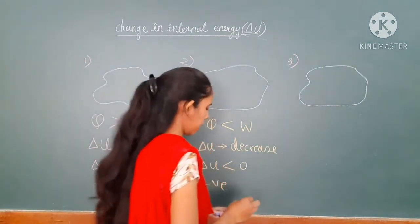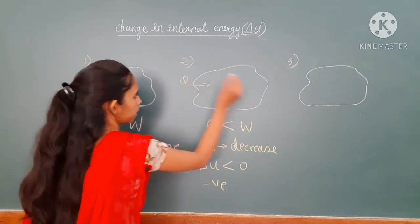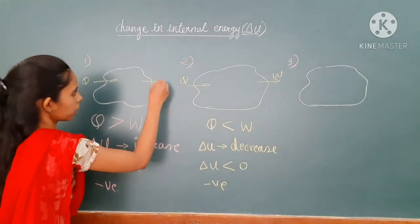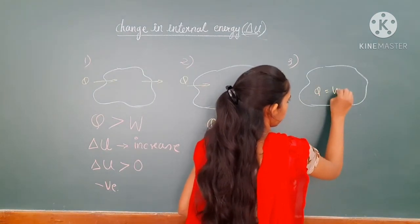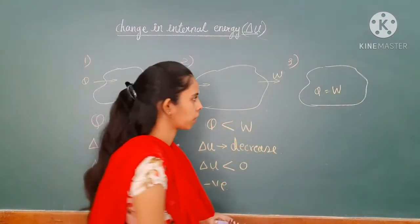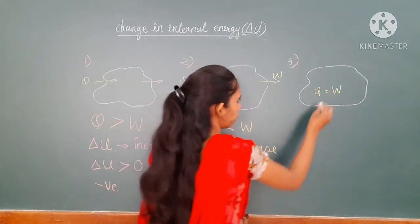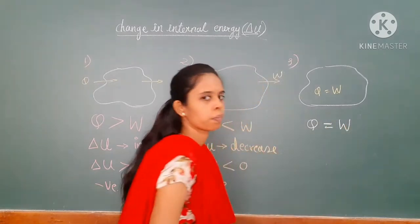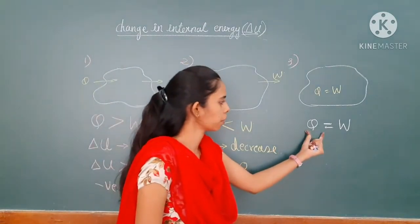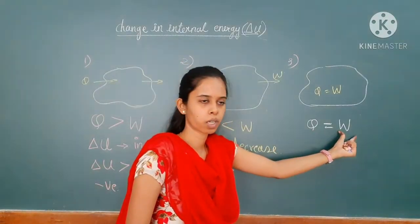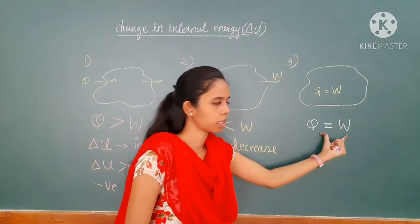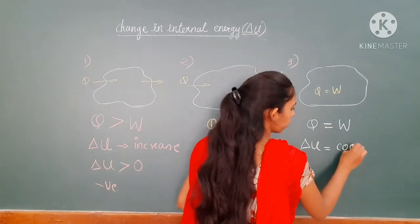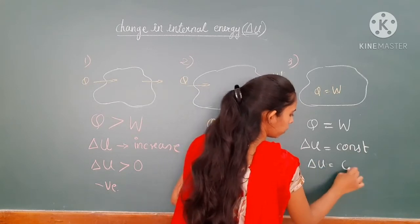In the third case, an amount of heat is added and work is going to be done. At this point, the work done is equal to the amount of heat — that is, Q equals work done. If Q is equal to the work done, or in other words both terms are equal, then delta U is equal to zero.